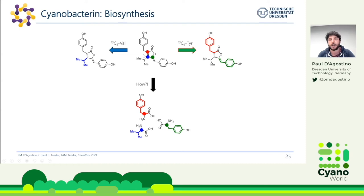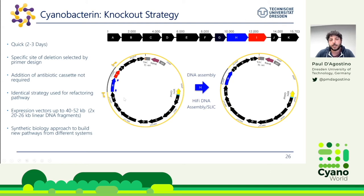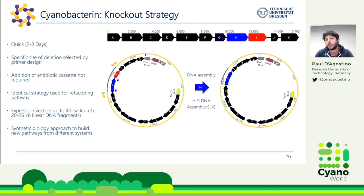We still had no idea how these building blocks were being joined together, so our next approach was to perform knockouts to work out which genes are performing which reactions. The knockout strategy, which can be applied in many other situations too, is straightforward: select the gene to knock out, select the adjacent gene, design outward-facing primers flanking both genes, amplify the vector backbone, then amplify the second gene as the insert. This allowed us to very quickly perform many knockouts in parallel — within a few days — without antibiotic cassettes.